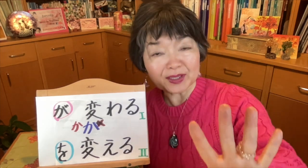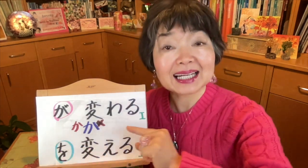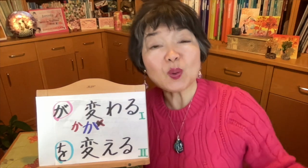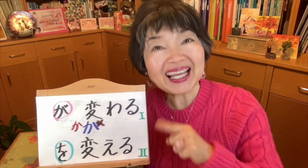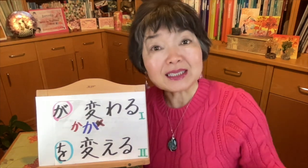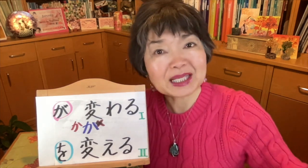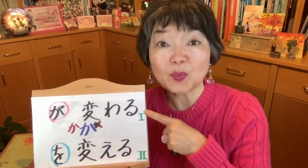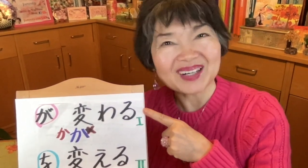In all these four verbs, we pronounce 'ka'. For example, something ga kawaru — something changes — and something wo kaeru — I change something. So all four verbs have an intransitive and a transitive form. First, I'm going to conjugate these verbs because all four conjugate the same way. With kawaru: kawarimasu, kawatte, kawatta, kawaranai, kawaru.